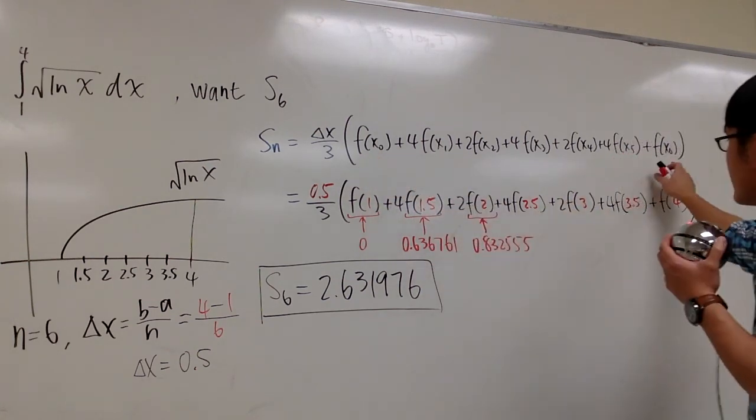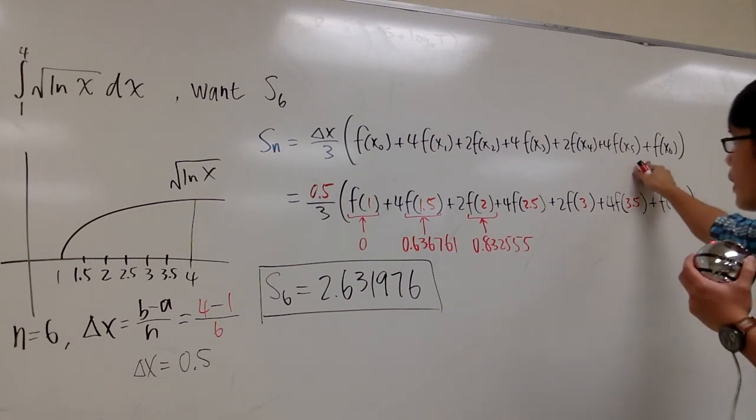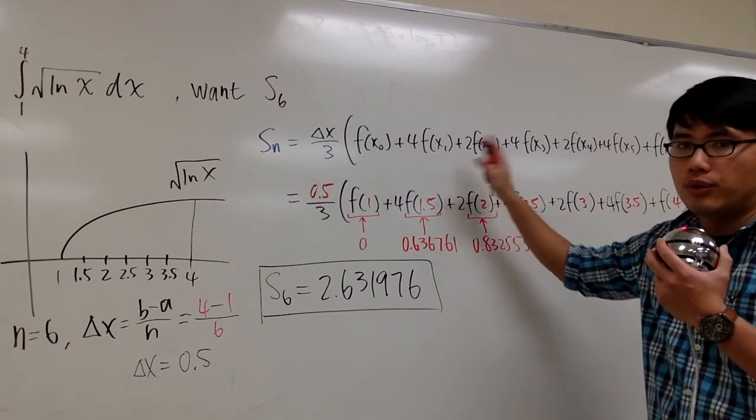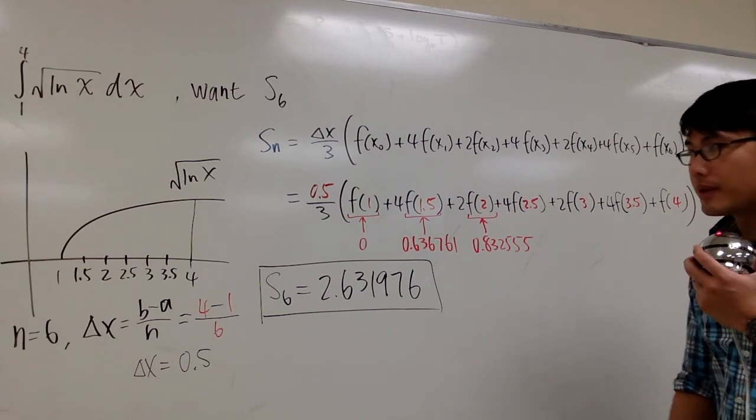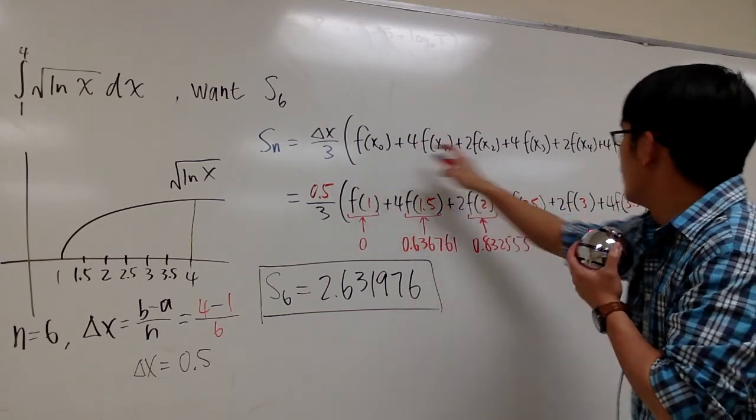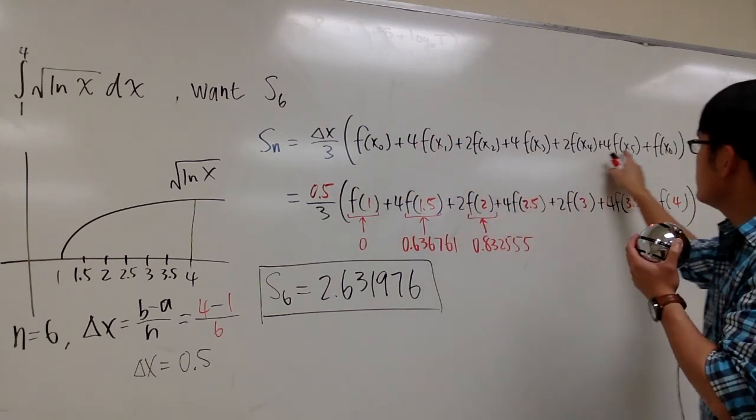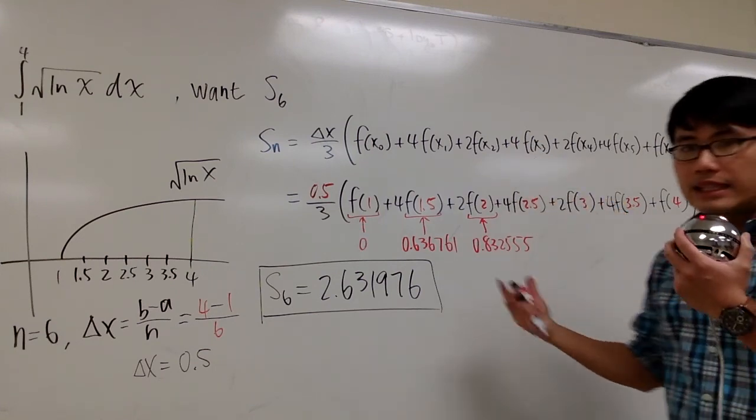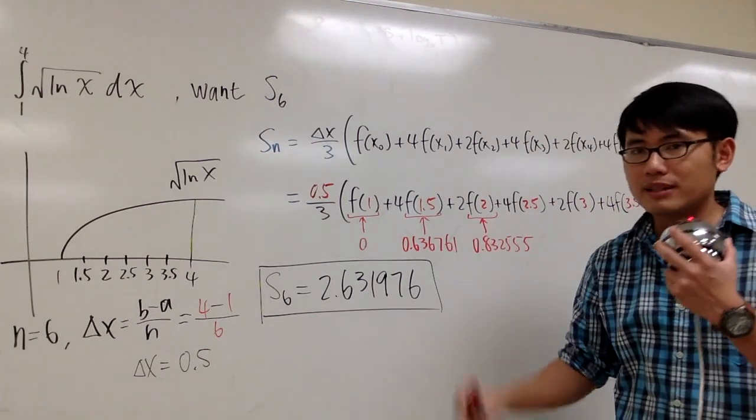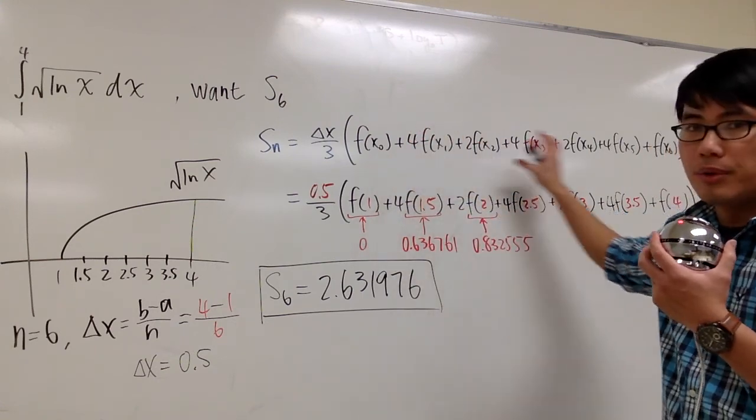Just remember, the first and the last have coefficient 1, and then in the middle you have 2, 4, 2, 4 alternating. So the way I look at it is 1s, 4s, 2s, then 4. Sometimes you may end up with a 2 in the middle, it's possible, but just remember the setup.